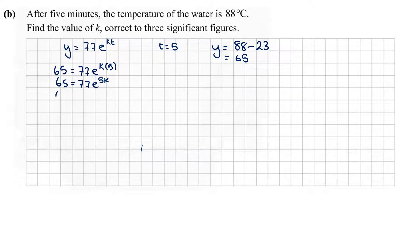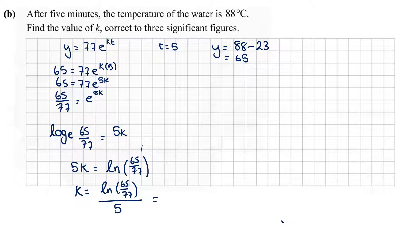We want to get the exponential part on its own, so we'll have 65 divided by 77 equals e to the power of 5k. We're going to use log to base e: log base e of 65 over 77 equals 5k. I'll flip this around: 5k equals - remember that log to base e is the natural log, so we'll leave it as ln. To make it as accurate as possible, I would leave it as 65 over 77 and then divide my whole answer by 5, and we'll put that straight into the calculator.